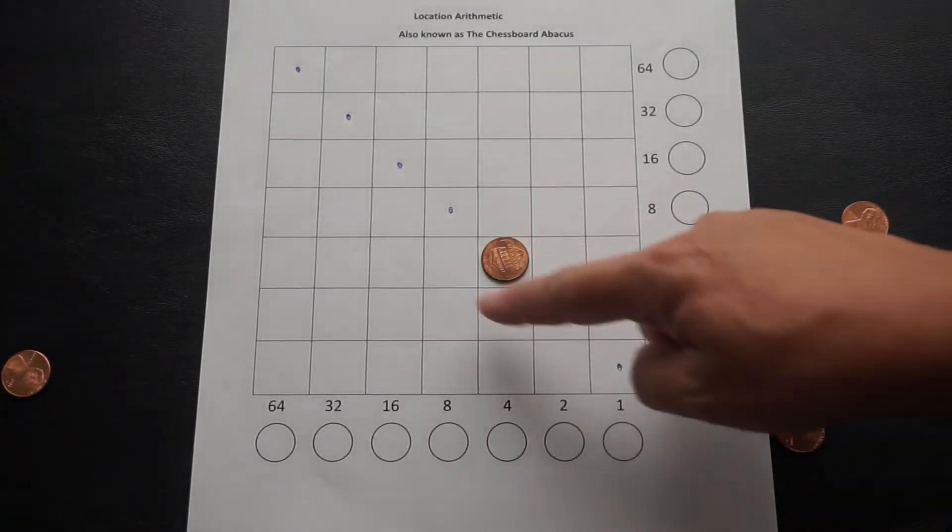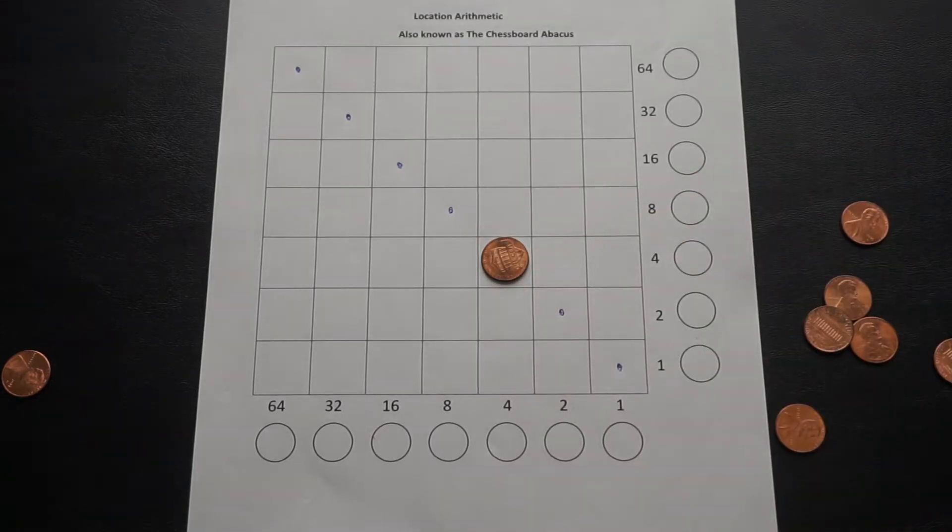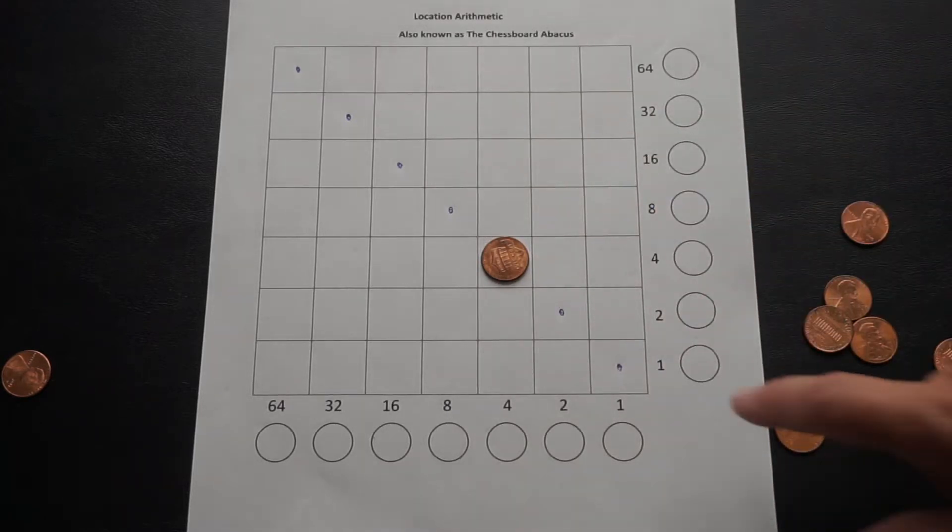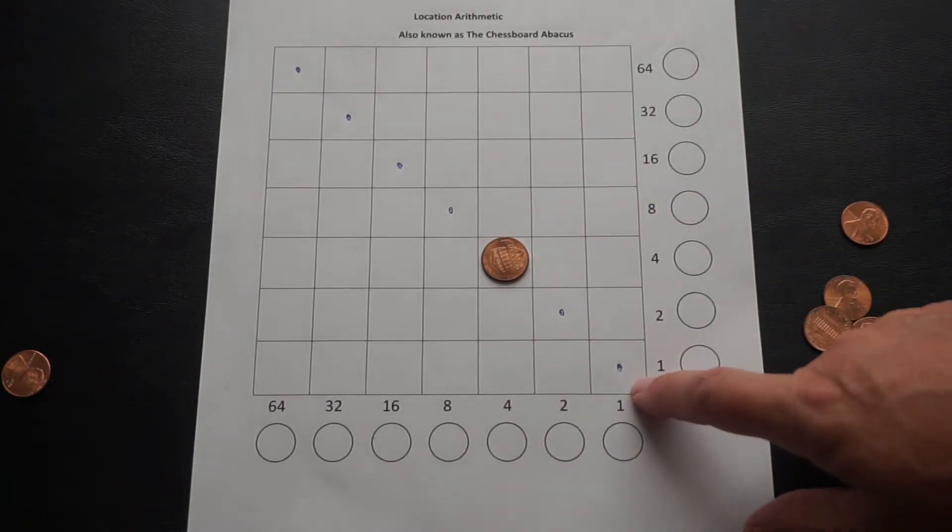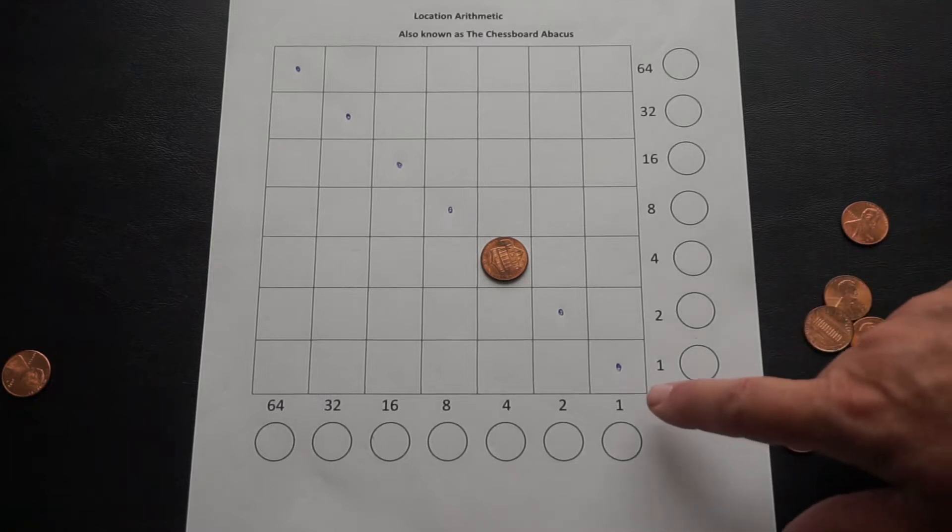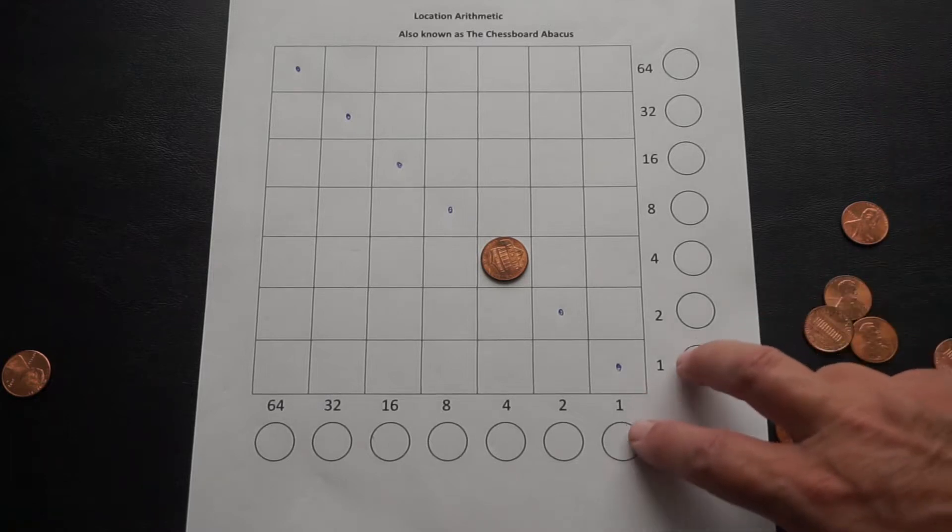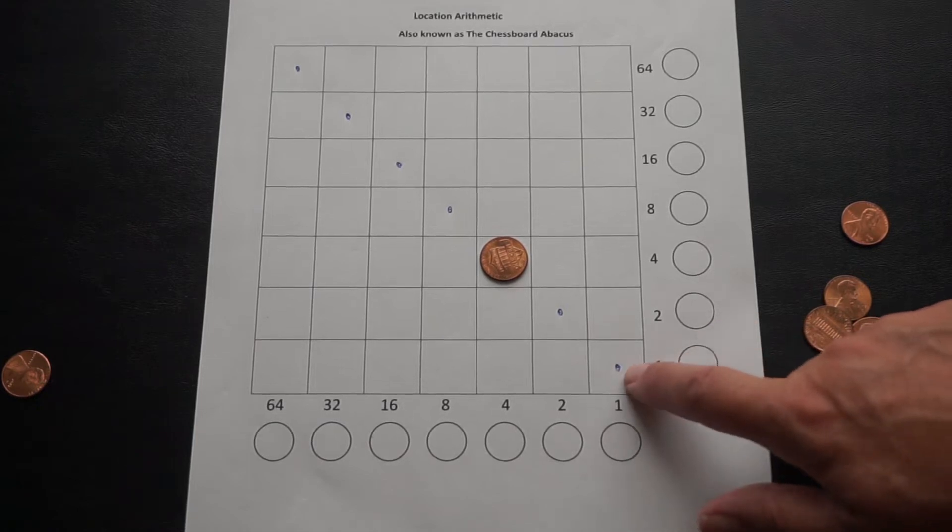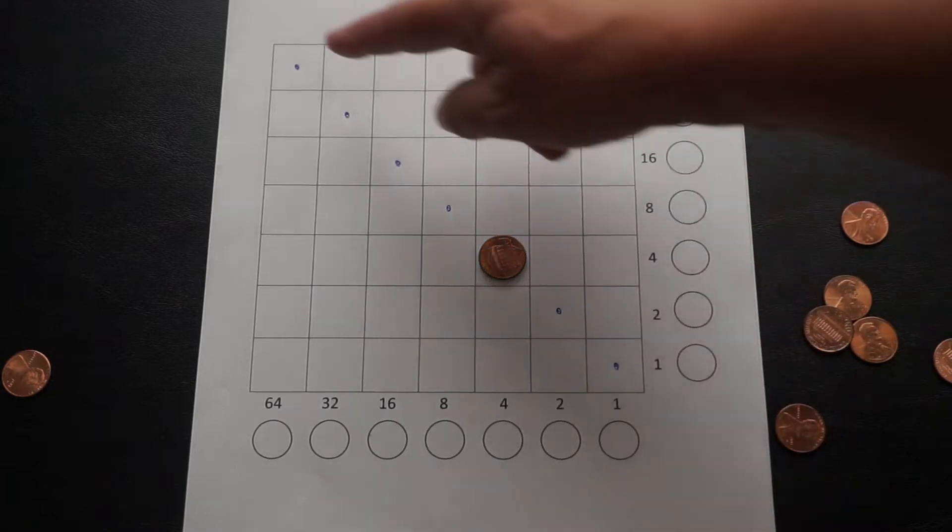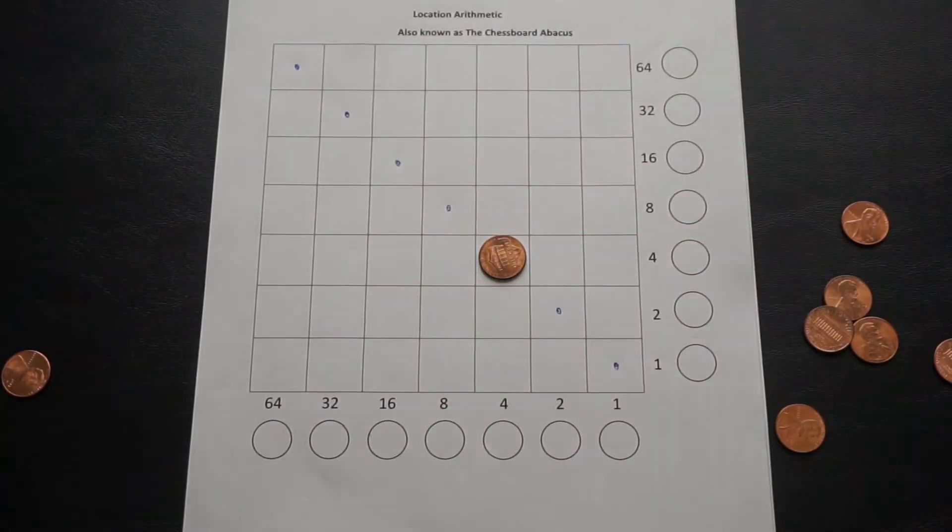And so an answer to a square root problem can look like a single counter on the board. You'll notice that I've put dots along the diagonal starting in the bottom right-hand corner. And that's just a helpful aid for me to be able to see where I have two numbers multiplied together. 1 times 1 is this, 2 times 2 is right here, 4 times 4, etc., all the way up to 64 times 64.